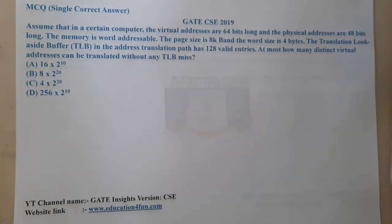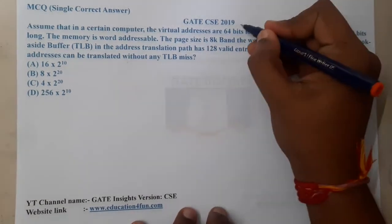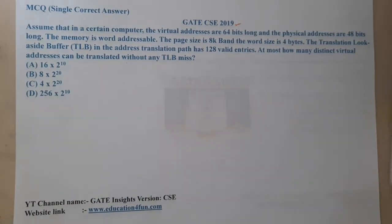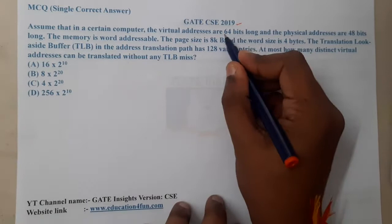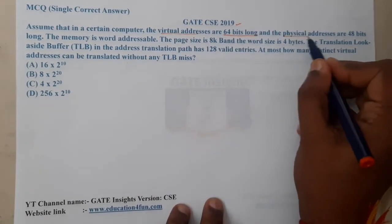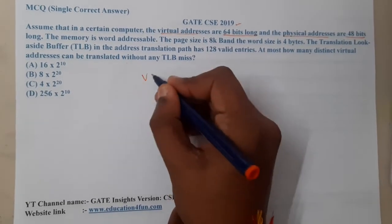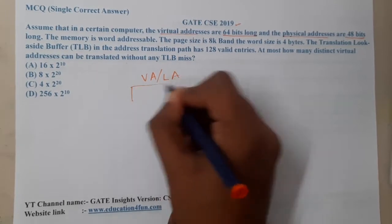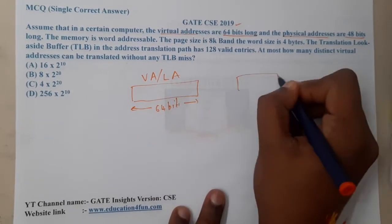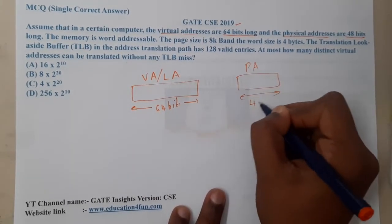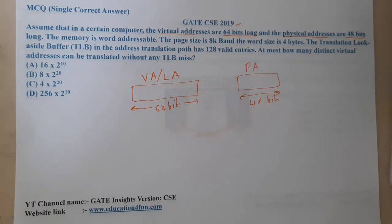Welcome back. This question belongs to GATE CSC 2019. In a certain computer, virtual addresses are 64 bits long — that is, the logical address is 64 bits — and the physical address is 48 bits long. The memory is word addressable.